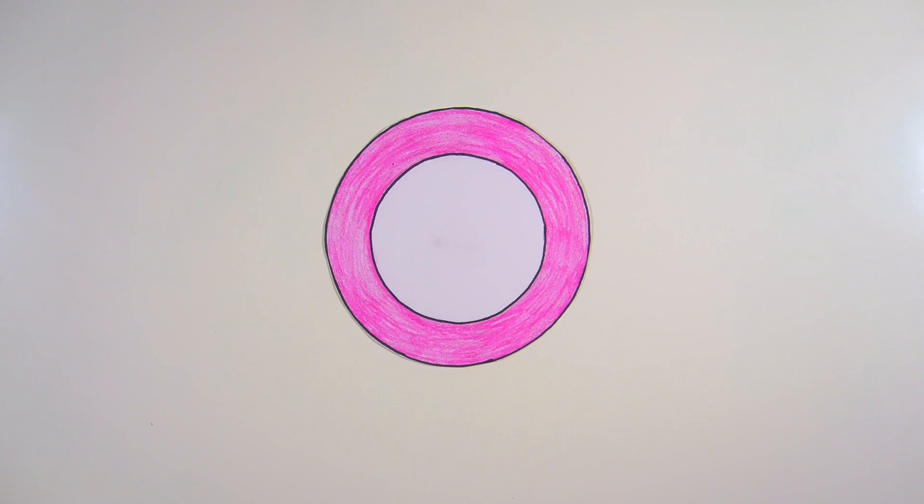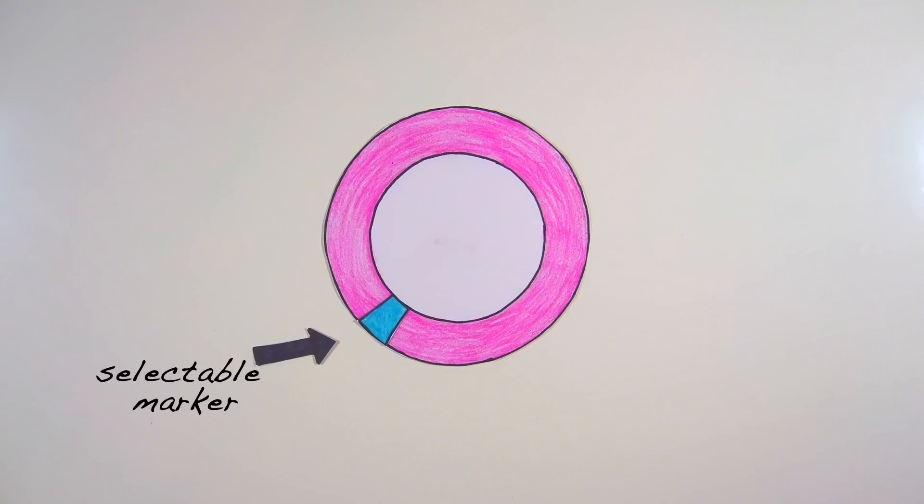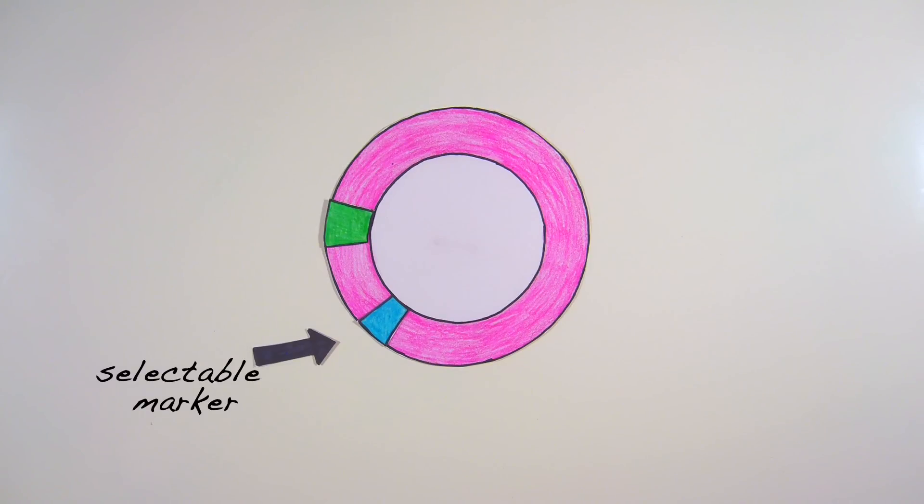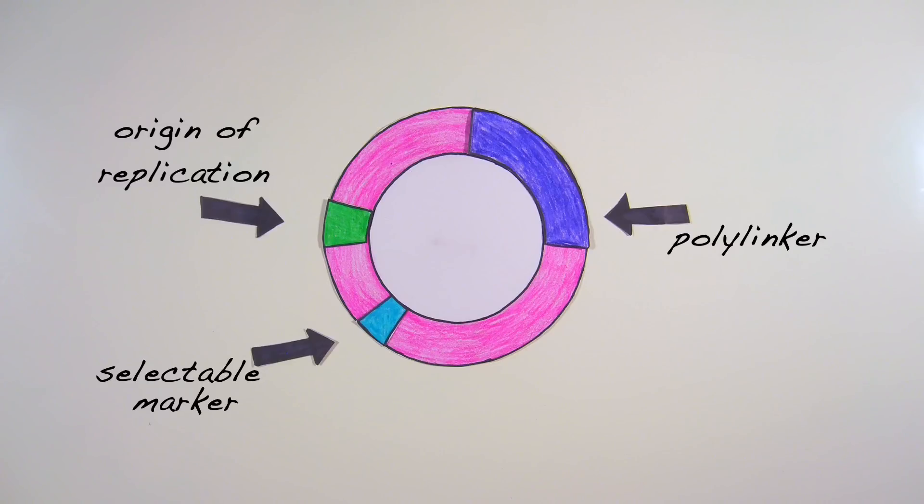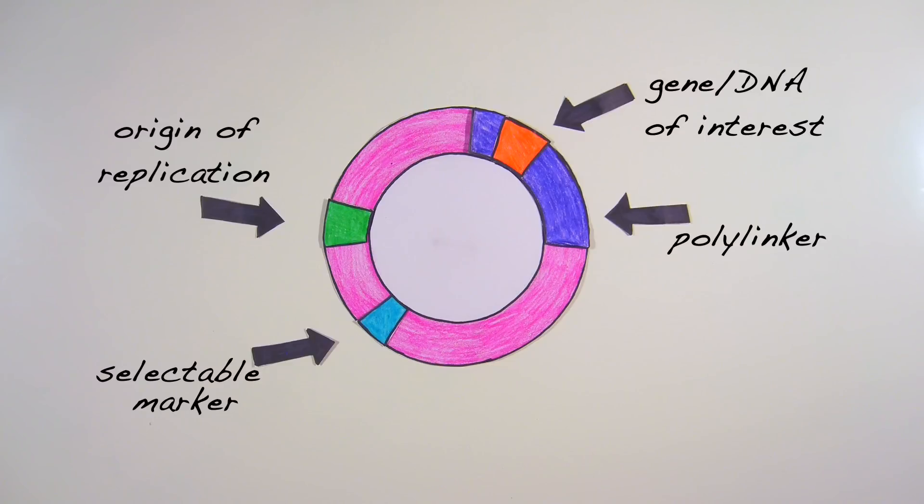The plasmids geneticists usually use have a selectable marker such as an antibiotic resistance gene, an origin of replication, a multiple cloning site or polylinker that has many known restriction enzyme sites, and a gene or DNA sequence of interest that is inserted into the multiple cloning site.